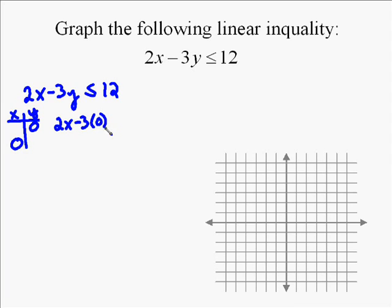Put in 0 for y and we're left with 2x ≤ 12. Divide both sides by 2 and you have x ≤ 6. So we have one point, our x intercept, which is (6, 0).